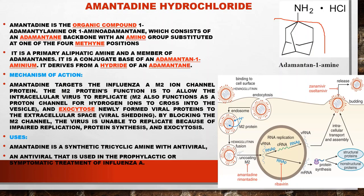Amantadine is an anti-influenza drug used to treat influenza infection. It targets the influenza A M2 ion channel protein. The M2 protein functions to allow the intracellular virus to replicate; M2 also functions as a proton channel for hydrogen ions to cross into vesicles and for exocytosis of newly formed viral proteins to the extracellular space. By blocking the M2 channel, the virus is unable to replicate.